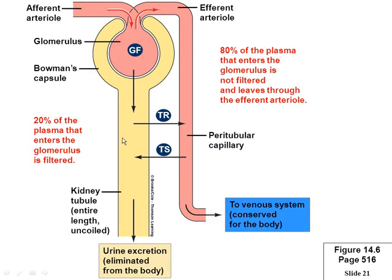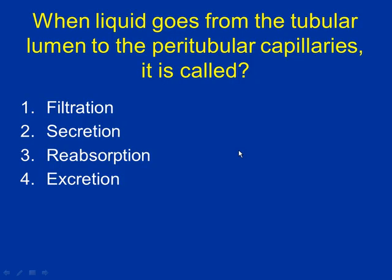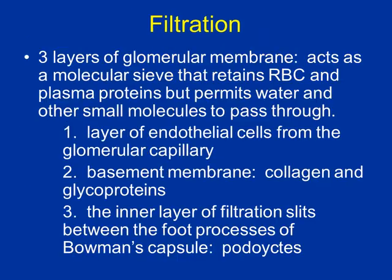When liquid goes from the tubular lumen to the peritubular capillaries — from the lumen of the tubule into the capillaries — it's pulling it into the blood, which we always call reabsorption. Filtration happens at the glomerulus. You have three layers of glomerulus membrane — like having three spaghetti strainers stacked.